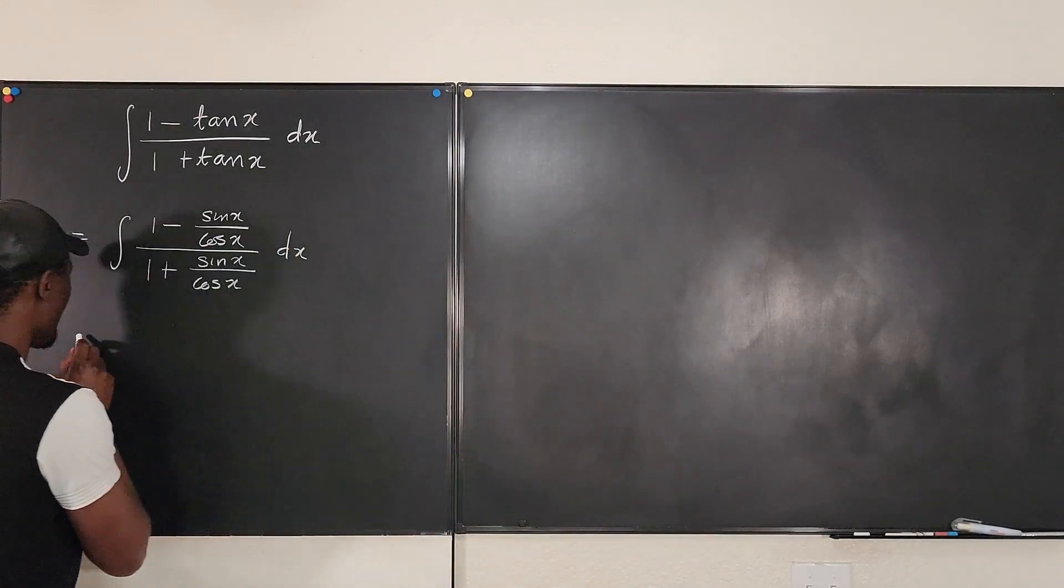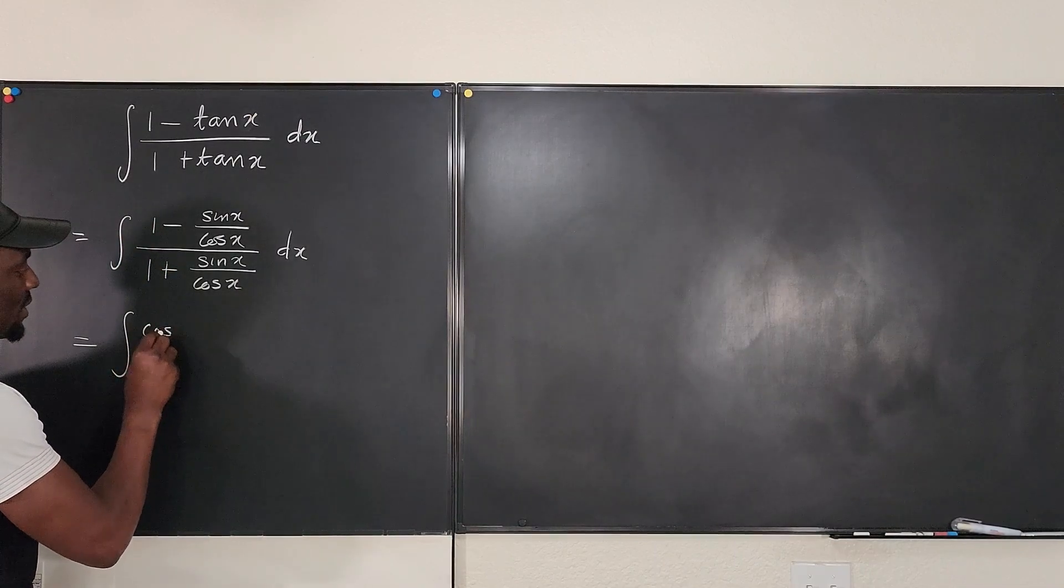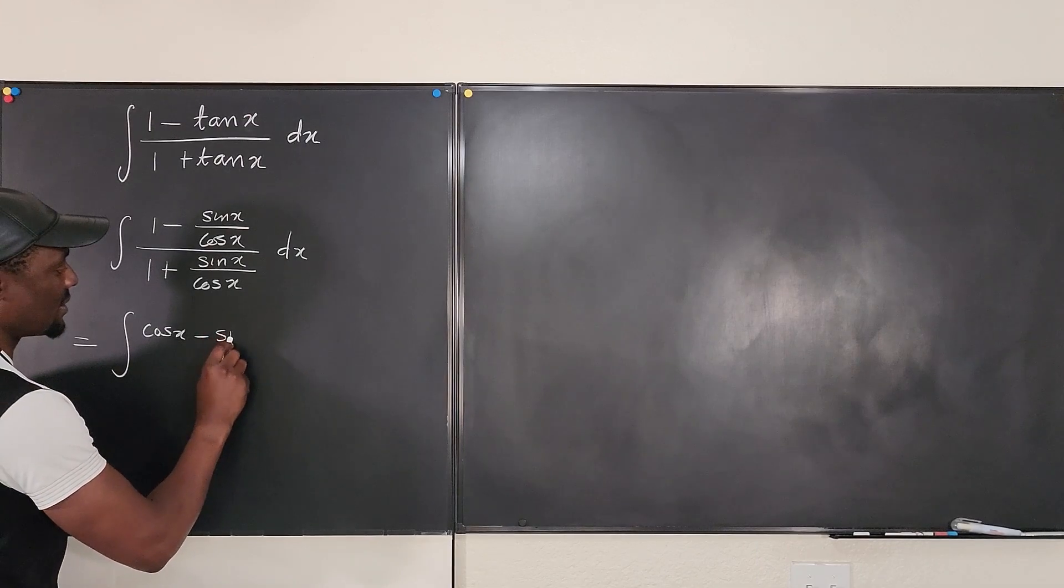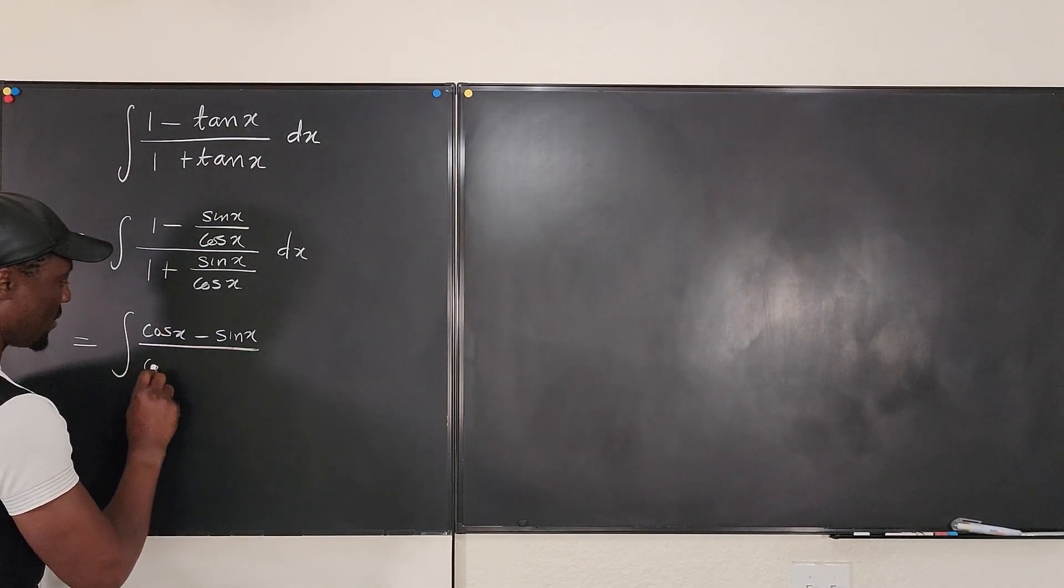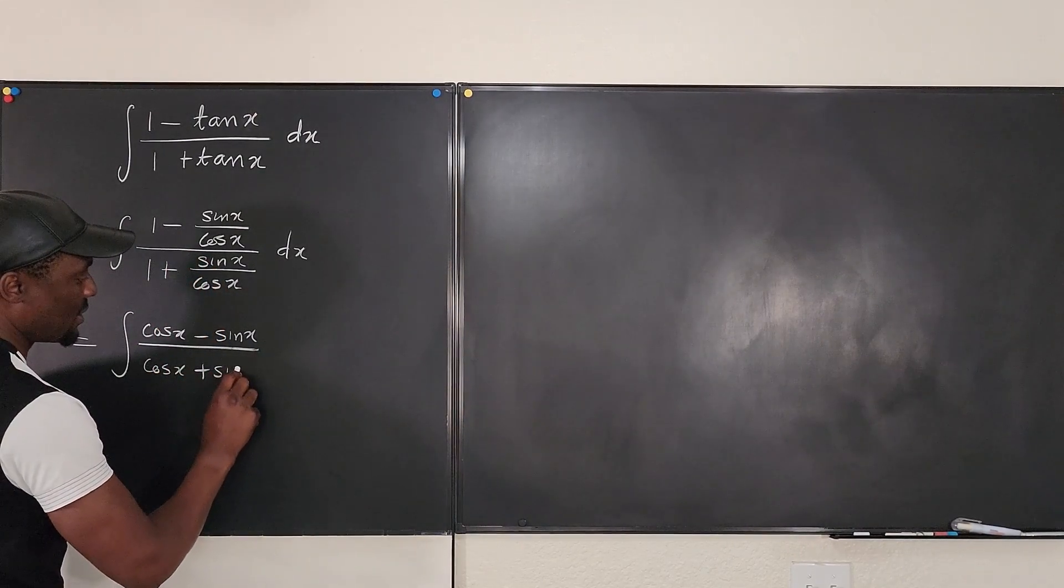So here, we're going to multiply this by cosine x. We're going to get cosine x. We're going to multiply this by cosine x. That gives us just minus sine x. We're going to multiply this by cosine x. We got cosine x. And we're going to multiply this by cosine x. We get plus sine x.